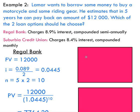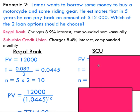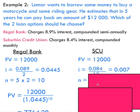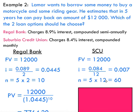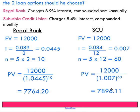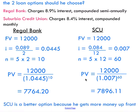For the second bank: same future value of $12,000, different interest rate of 8.4%, compounded monthly. We divide by 12, and multiply five years by 12 to get n equals 60. Substituting this in, we get $7,896.11. So which option is better? Borrowing from the second bank is the better option because we get more money upfront.